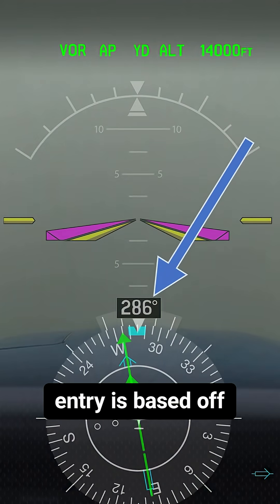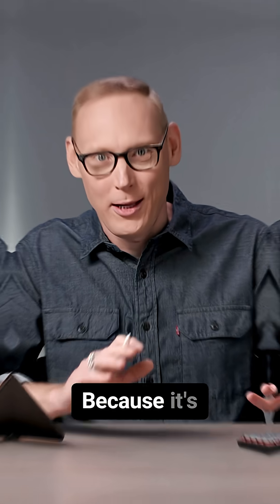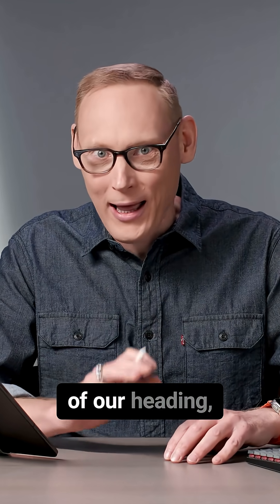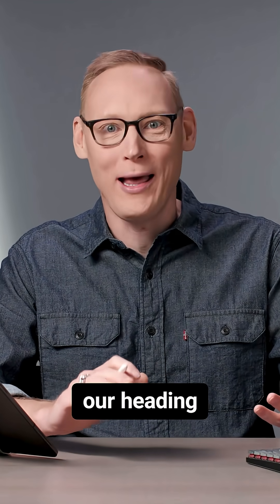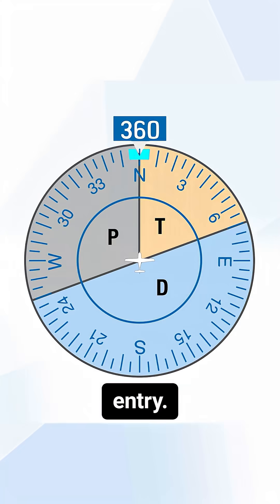The recommended entry is based off of our heading as we arrive at the holding fix for the first time. Because it's based off of our heading, we can use our heading indicator and a trick called the thumb rule to figure out the recommended entry.